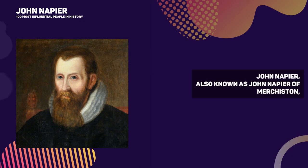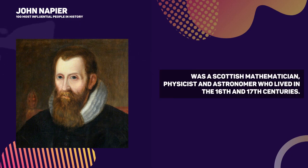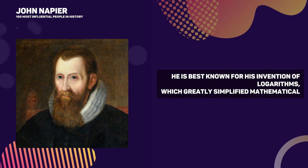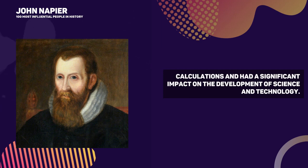John Napier, also known as John Napier of Murchiston, was a Scottish mathematician, physicist, and astronomer who lived in the 16th and 17th centuries. He is best known for his invention of logarithms, which greatly simplified mathematical calculations and had a significant impact on the development of science and technology.